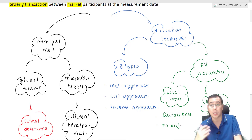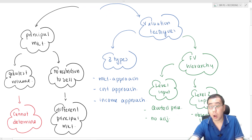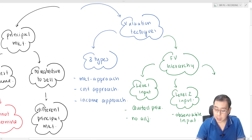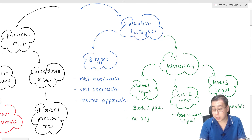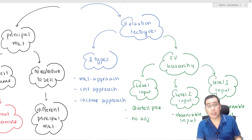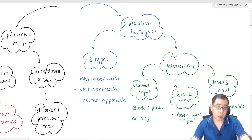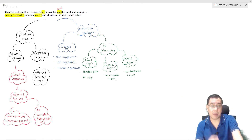Level 2 input is the use of observable inputs other than level one - specifically, the quoted price of a similar asset or liability. If an entity is unable to use level one or level two input, it will rely on level three input, which is the use of unobservable inputs. This is the most unreliable among the three levels. This summarizes IFRS 13 - hopefully this gives you a quick revision on fair value measurement.